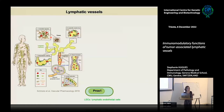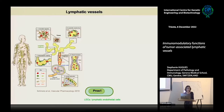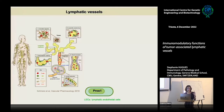Our lymphatic system drains the peripheral tissues to the draining lymph nodes. They can drain fluids, lipids, macromolecules, and cells. In particular, immune cells that are in the peripheral tissues can enter these lymphatic vessels at the level of lymphatic capillaries, where they adopt a crawling mode of migration to reach the lymphatic collectors. Here they are submitted to a passive flow transport due to the very fast lymphatic flow, and also due to valves that maintain a unidirectional flow. They then reach the lymph nodes, which they enter through the subcapsular sinuses. The cells that line these lymphatic vessels are the lymphatic endothelial cells.